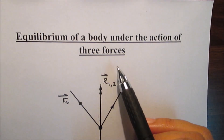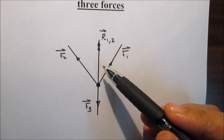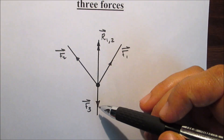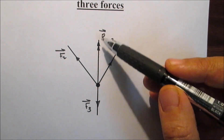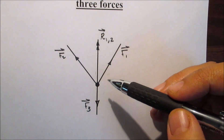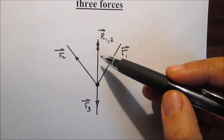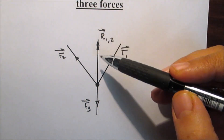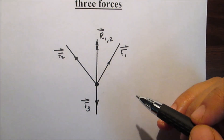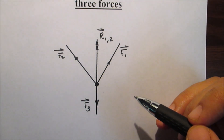Now the equilibrium of a body under the action of three forces. If three coplanar forces, F1, F2, and F3, are acting at a point and they are in equilibrium, and if R1 is the resultant of F1 and F2, then R1 and F3 are balanced. From the conditions of equilibrium of two forces, R1 and F3 are equal in magnitude, opposite in direction, and have the same line of action. Generally, if three forces acting at a point are in equilibrium, then the resultant of any two forces is equal in magnitude to the third force, acts in the opposite direction, and they have the same line of action.